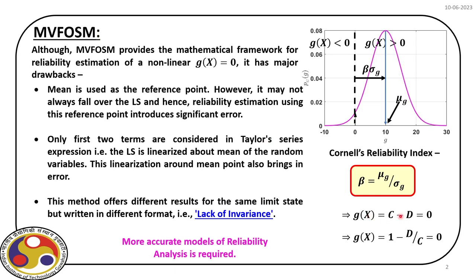We also noticed that if we change the format of the limit state — for example, c minus d equal to 0 versus 1 minus d by c equal to 0 — the problem statement and level of uncertainty remain the same, but only the format changes. If we use different formats of the limit state and find Cornell's reliability index, we end up with different estimates of beta and subsequently probability of failure, which is phi of minus beta. This is what we call lack of invariance.